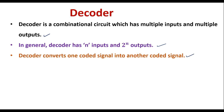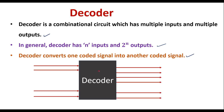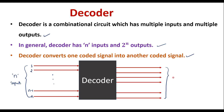Now let us see the block diagram of a general decoder circuit. This is the general decoder block diagram. These are n number of inputs — first input, second input, and so on up to the nth input. Similarly, these are the outputs; it has 2-to-the-power-n outputs. So this is the general block diagram of a decoder in which we have n inputs and 2-to-the-power-n outputs.